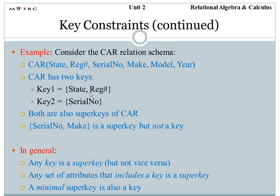In the CAR relational schema example with its respective attributes: the CAR relation has two keys — key one comprises the state and registration number, while key two comprises the serial number. Both are also super keys of CAR. Since a key is always formed from a super key, any key is a super key but a super key is not necessarily a key. Any set of attributes that includes a key is a super key, but a super key cannot always be a key. The minimal super key is the key.